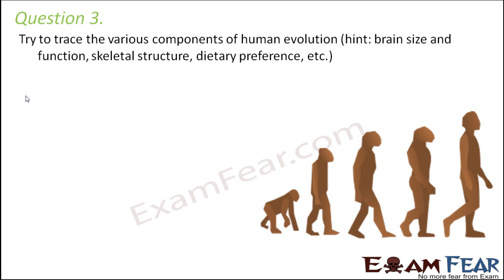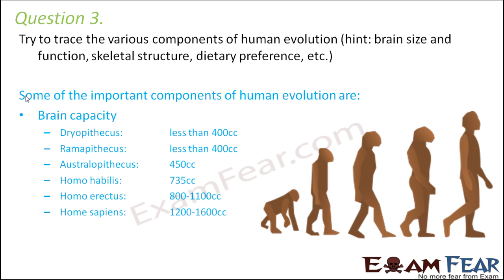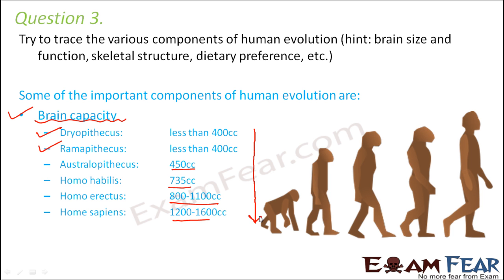Question number three: trace the various components of human evolution — brain size and function, skeletal structure, dietary preference, etc. One important component is brain capacity. Starting with Dryopithecus and Ramapithecus, it was less than 400 cc. With Australopithecus it increased to 450 cc, Homo habilis to around 700 cc, Homo erectus to 800–1100 cc, and finally Homo sapiens have 1200–1600 cc. The brain gradually developed and increased with evolution.